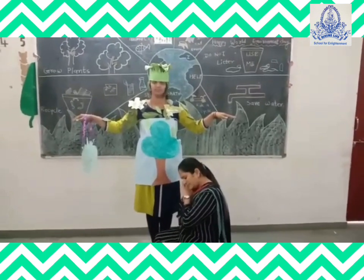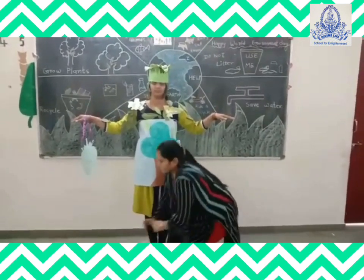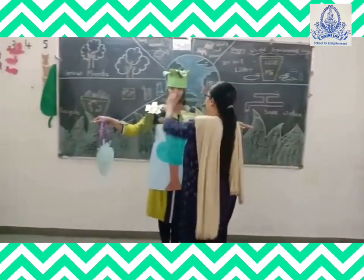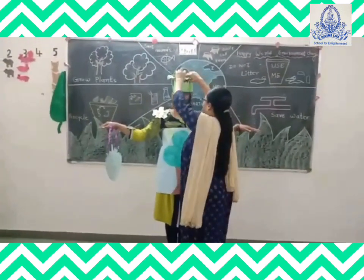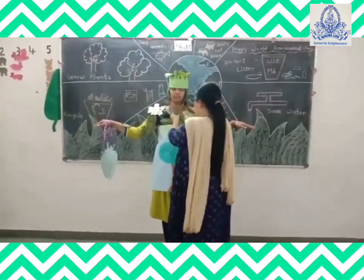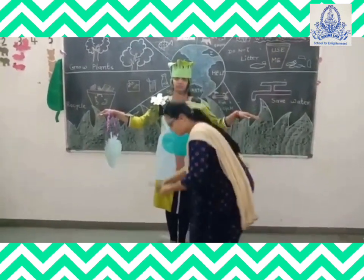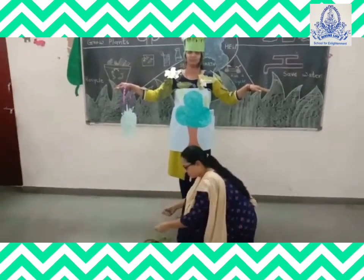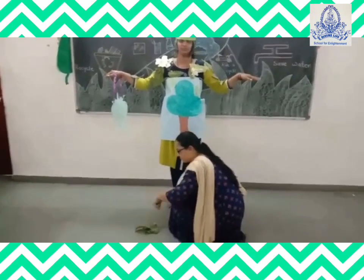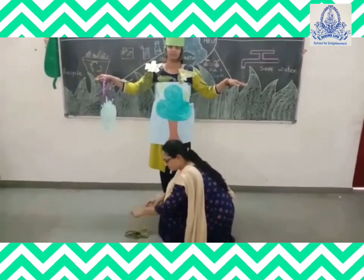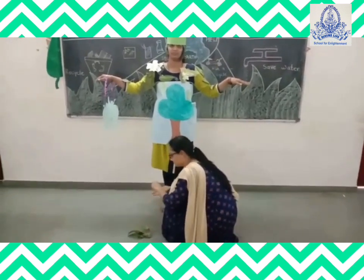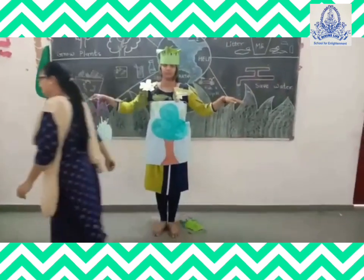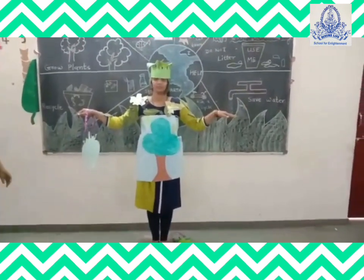Now, a second man is coming. What is he doing? Dekho, toh wou kya kar raha hai? Wou dry leaves and branches ko collect karke, usko jalaa kar, khana bana raha hai. Trees give us fruit, vegetables, flowers and wood also.